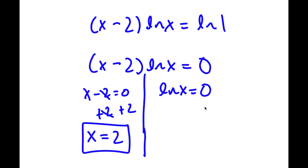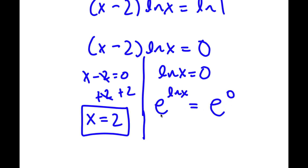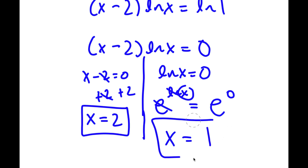For ln x equals 0, I'm going to take e to the power of both sides. So I have e to the power of ln x is equal to e to the power of 0. Now e and ln cancel out, so the left-hand side is simply x. And e to the power of 0 is 1, because anything to the power of 0 is 1. So x equals 1.